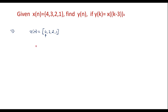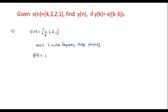Let me apply the circular frequency shift property. We know that the circular frequency shift property is given by: suppose the sequence y of n equals W_N to the power minus l·n times x of n. The N-point DFT of this is given by X of k minus l, which is nothing but Y of k. This is the circular frequency shift property.